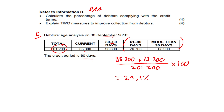The $35,300 plus the $23,300, as previously stated, divided by the grand total of $201,200, multiplied by 100 to get a percentage. That is what they wanted.